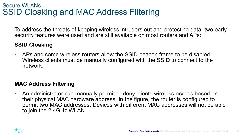In SSID cloaking, APs and some wireless routers allow the SSID beacon frame to be disabled. Wireless clients must manually configure the SSID to connect to the network. However, in 2022 this is not a very good option because with modern hacking technologies, a threat actor can determine your SSID in less than five minutes even with SSID cloaking enabled. MAC address filtering, where an administrator can manually permit or deny clients based on their physical MAC hardware address, is actually better than SSID cloaking.